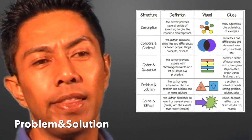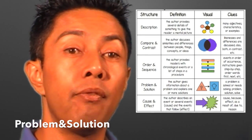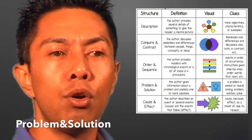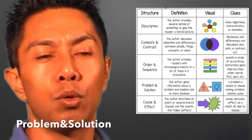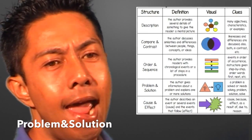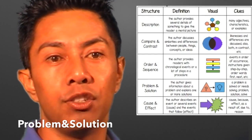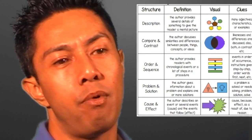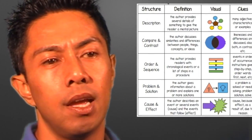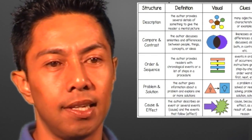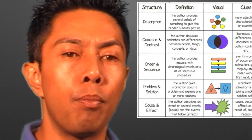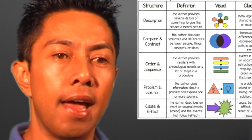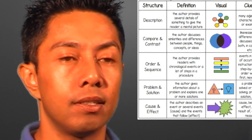Problem and solution is where the author presents a problem and then provides the solution or solutions. You can also think of this as question and answer — for example, 'But how does the water get back into the clouds? Through the process of evaporation.' A scientific hypothesis is also in the problem-solution format, where the hypothesis is the problem and the conclusion is the solution.